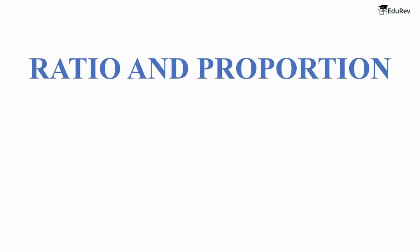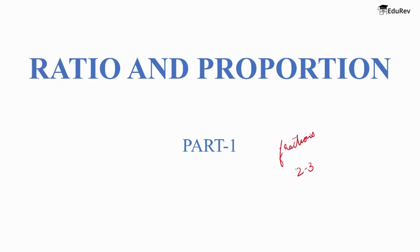Hello everyone, welcome to EduRev. Ratio and proportion CAT questions are a part of the quantitative aptitude section of the CAT exam. It is one of the easiest topics. CAT questions on ratio and proportion are mainly based on fractions. You can expect 2 to 3 questions from this chapter, so a basic understanding and conceptual clarity is important. Today we will start with ratio and proportion from the basics and move to the advanced level later.